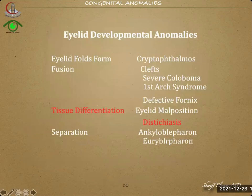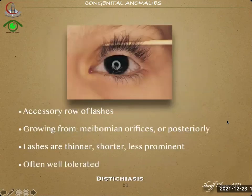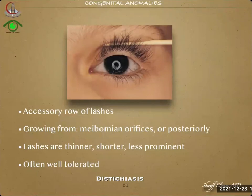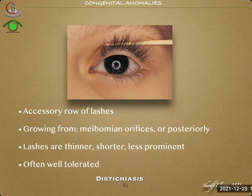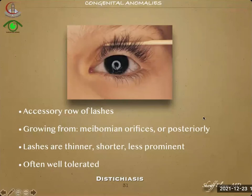This finishes fusion deformities. We now come to tissue differentiation deformities and speak about eyelid malposition and distichiasis. Distichiasis — not trichiasis, which is something else — refers to an accessory row of lashes growing from the meibomian orifices or posteriorly. These lashes are thinner, shorter, less prominent, and often well tolerated. This is congenital distichiasis, as there is also an acquired variant that occurs as a sort of metaplasia due to various causes.